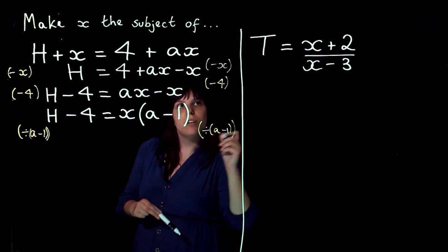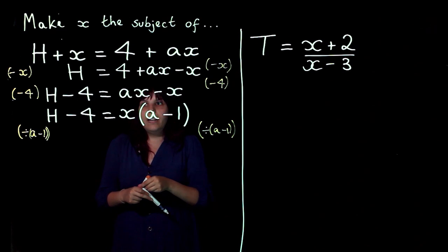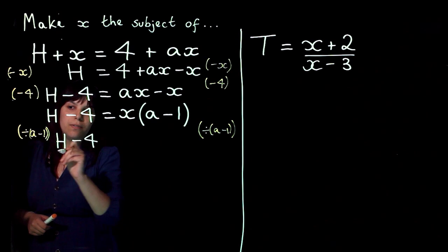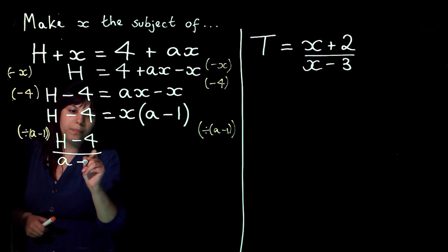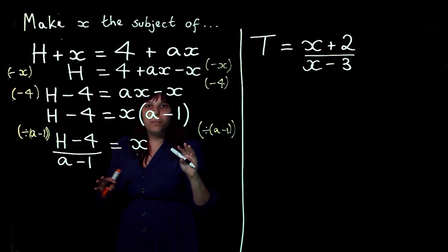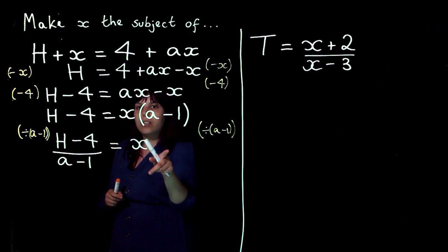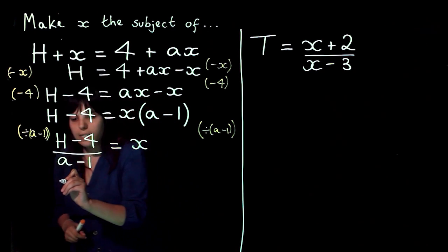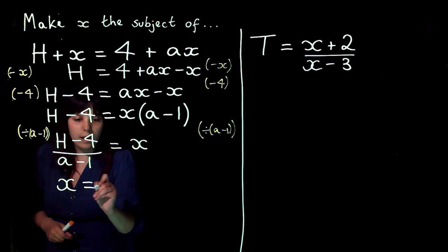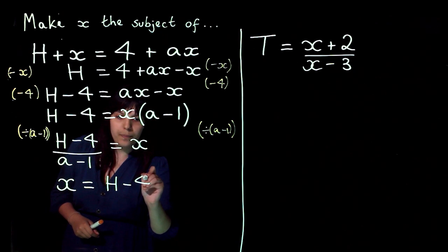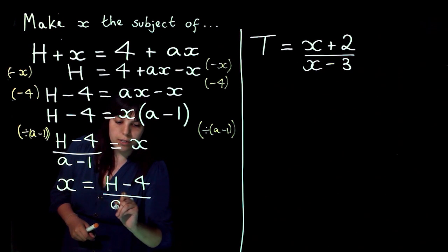Sorry, my pen's running out. Then this side is going to be h minus 4 divided by a minus 1. And this side is going to be x because the a minus 1 will cancel out to give you 1. So that is my rearranged formula and I'm going to rewrite it the way I like it. So x equals h minus 4 over a minus 1.